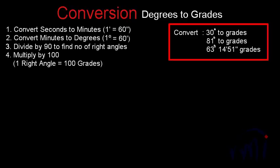In this video we are going to learn how to convert degrees to grades. The basic thing in these kind of conversions is that all units of measuring angles are defined based on the number of right angles. So if we can convert the given degrees or grades or radians into the number of right angles, from there we can directly convert into any of the given units.